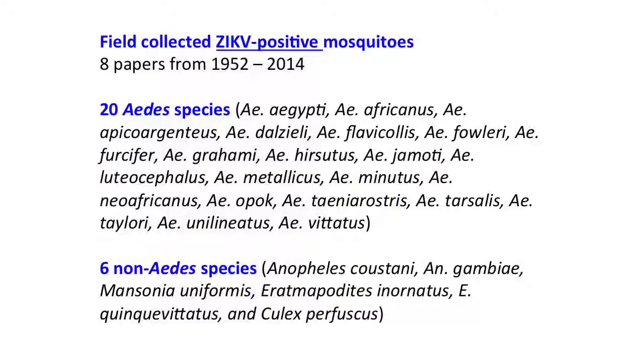I came back from Maceió and looked at all the old literature I could find. I found only eight papers between 1952 and 2014. In those eight papers, these are all the species that had tested positive for Zika virus - sure, Aedes aegypti was there, but there were 19 other species in the genus Aedes, and then there were species in non-Aedes genera: two species of Anopheles - the malaria mosquito - Mansonia, Eretmapodites, and a Culex. So for me, it wasn't clear cut that it was all just Aedes aegypti.